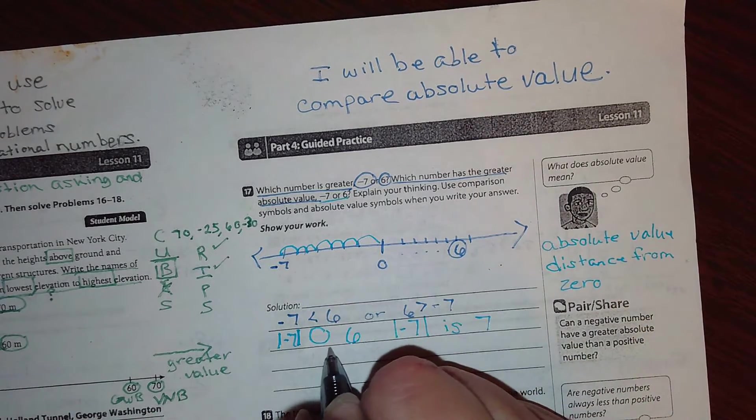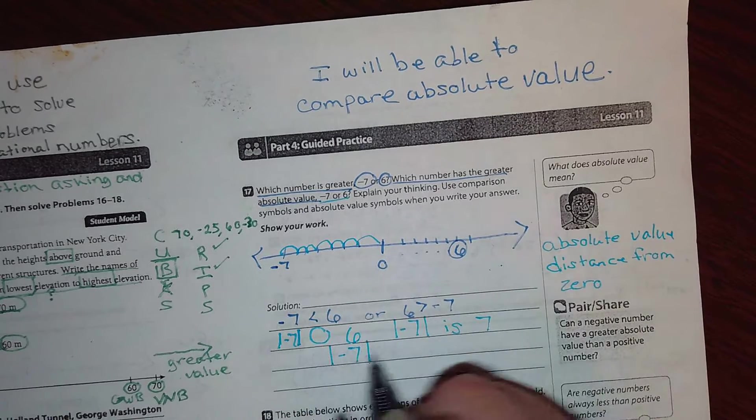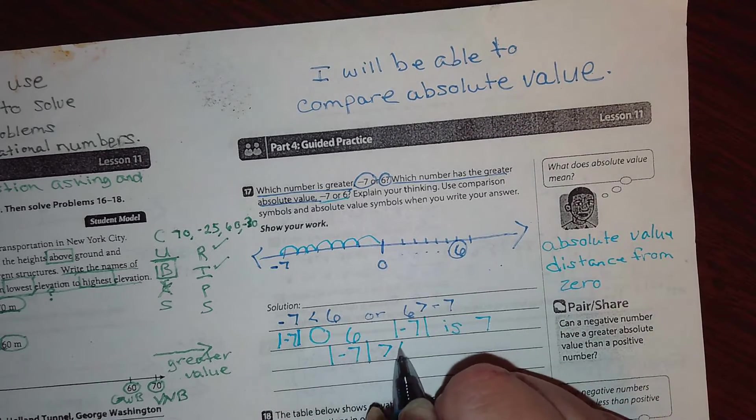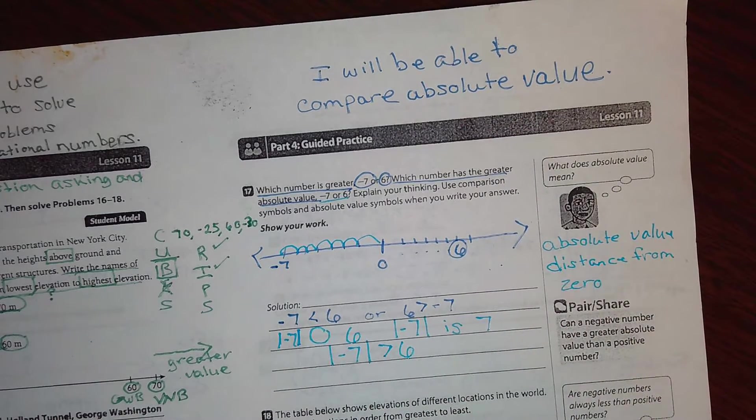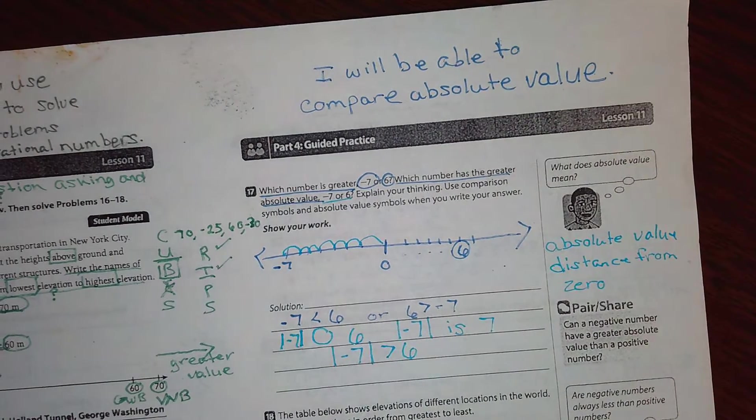So for this one, you would write the absolute value of negative seven is greater than six. Okay. And that's because an absolute value is always positive.